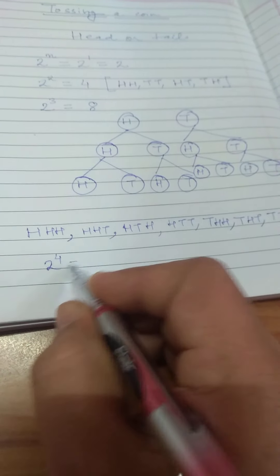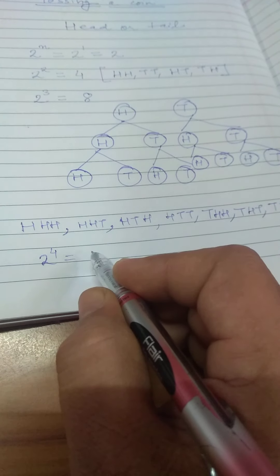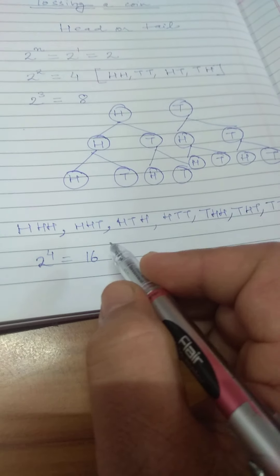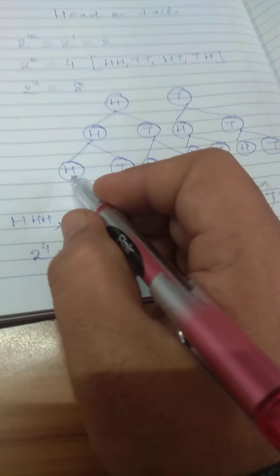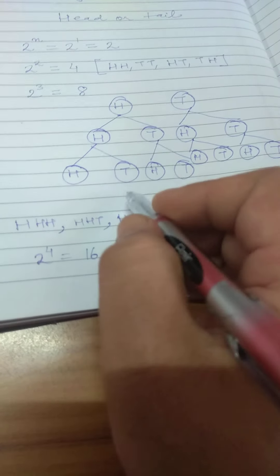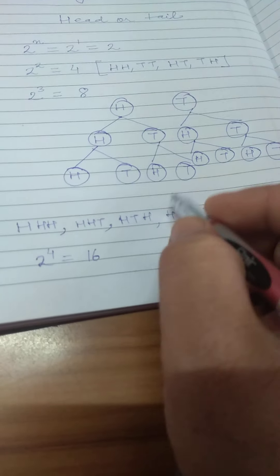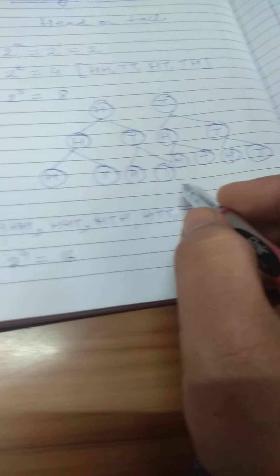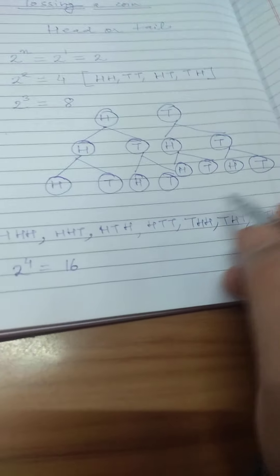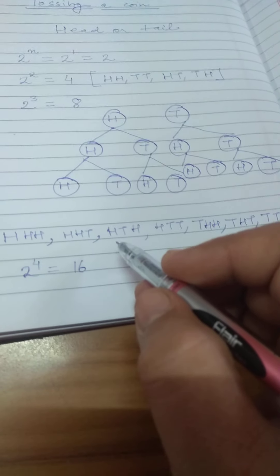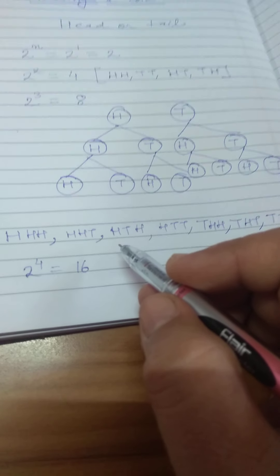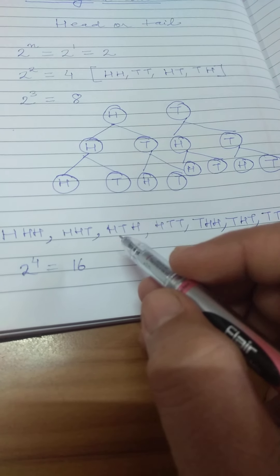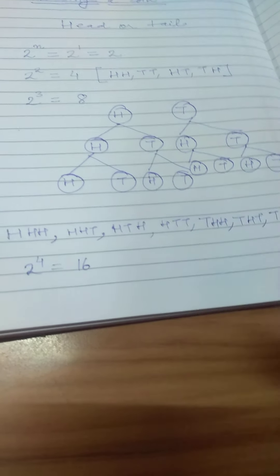In the same way, if you take four coins, it will be 2 raised to the power 4, which will be 16. Just make some more branches — head, tail, head, tail — and in this way you will get all 16 outcomes easily.